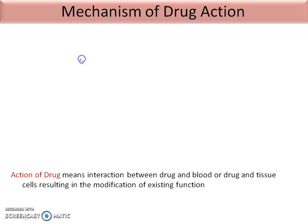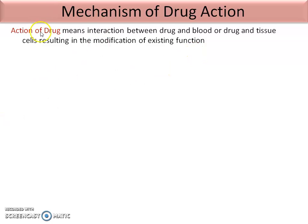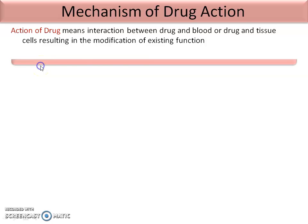First of all, we see what is meant by drug action. Action of drug means the interaction between drug and the blood, or the drug and tissue cells, resulting in the modification of the existing function. That means drug action is the interaction between drug and blood or drug and tissue cells, from which we get the result.